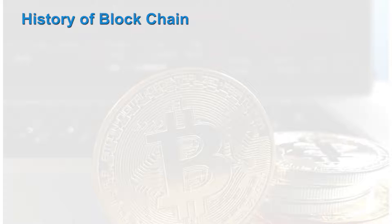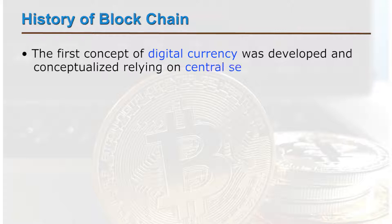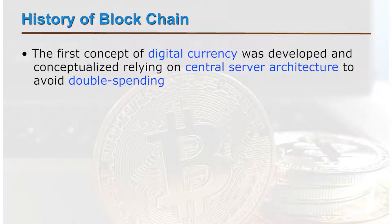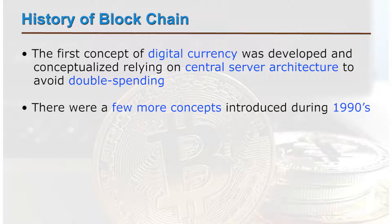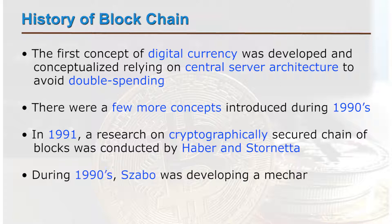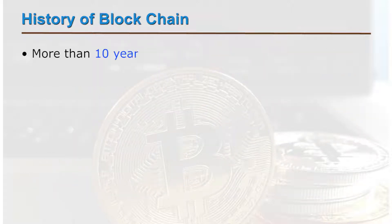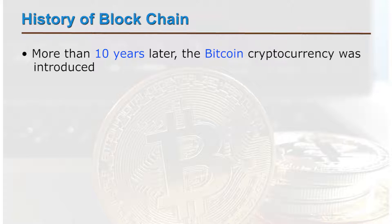Looking at the history of blockchain, the first concept of digital currency was developed relying on a central server architecture to avoid double spending. A few more concepts were introduced later in the 1990s. In 1991, research on a cryptographically secured chain of blocks was conducted by Haber and Storneter. During the 90s, Sabo was developing a mechanism for a decentralized digital currency named Bitgold. More than 10 years later, the Bitcoin cryptocurrency was introduced.